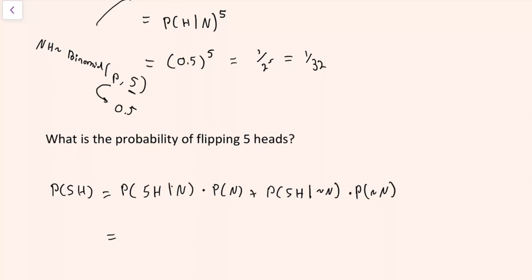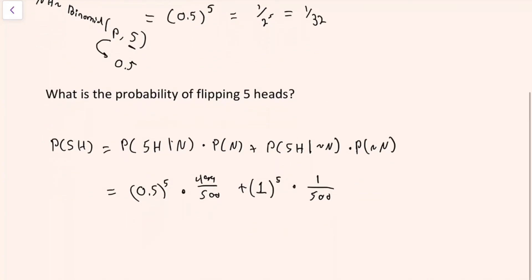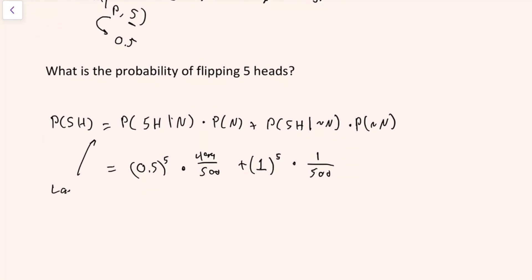We have all the information we need from the original question to answer this. The probability of five heads if you pick the normal coin is what we found previously: 0.5 to the power of five. The probability that you pick the normal coin is 499 out of 500, since 499 of the 500 coins are normal. The probability that you get five heads if you don't pick the normal coin is the probability of a head for each flip to the power of the number of flips, times the probability of picking the non-normal coin — which is 1 out of 500. The key thing this question tests is whether you know the law of total probability.